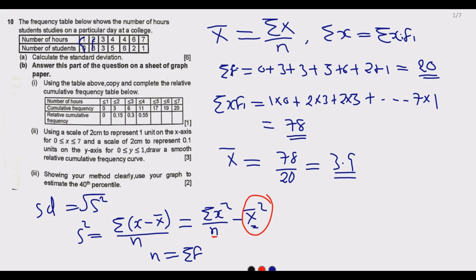Recall the variance formula: summation of X² over n, minus the mean squared. When frequencies are given, the summation of X² is computed as the summation of each observation X squared, multiplied by its frequency.